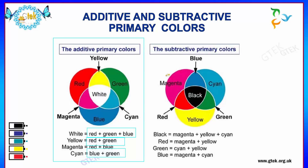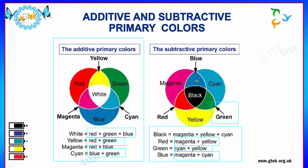On the other side, if we consider the subtractive primary colors, we have magenta, cyan and yellow. The combination of all three — magenta, yellow and cyan — gives black. The combination of magenta and yellow yields red. The combination of cyan and yellow gives green. And the combination of magenta and cyan gives blue.